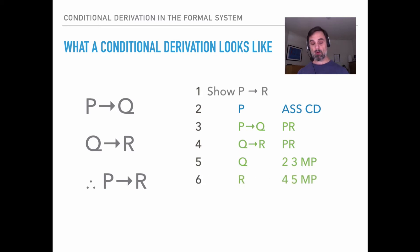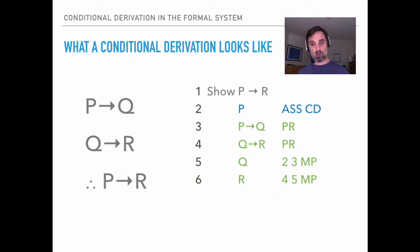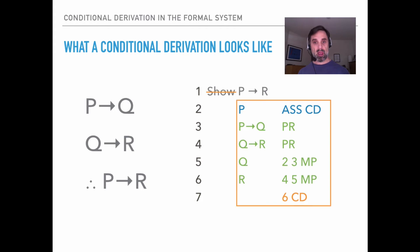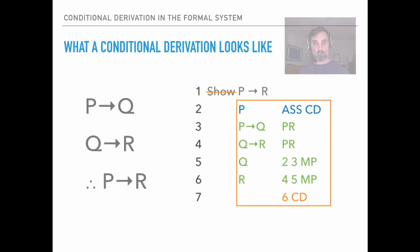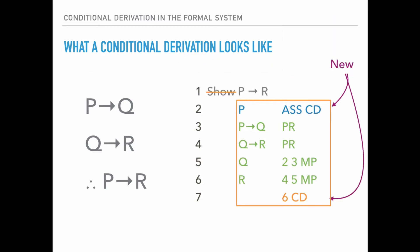Look at what we've done: we assumed P, the antecedent of the conditional we're trying to show, and we reasoned to R, the consequent. We've argued from the antecedent to the consequent. Now that we have the consequent, we can finish the derivation — we say '6CD,' meaning on line 6 we have the consequent of the conditional we're trying to show, and that lets us box and cancel the conclusion. With direct derivation you need to get the conclusion on a line, but here all you need is the consequent. There are two new parts: line 2 (the assumption) and line 6 (boxing and canceling with CD).